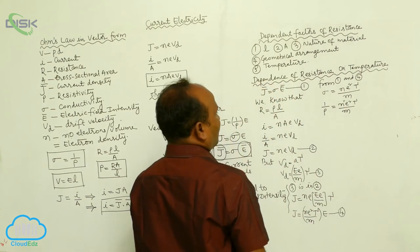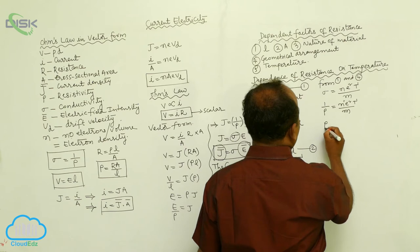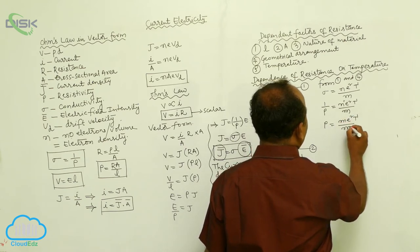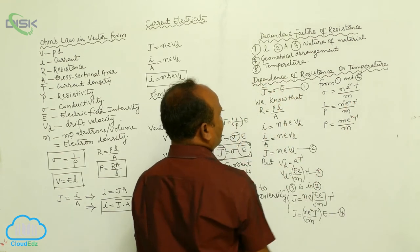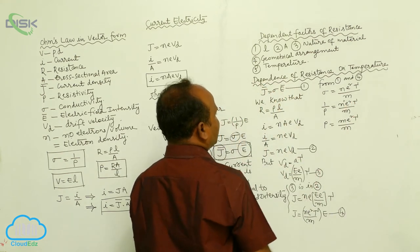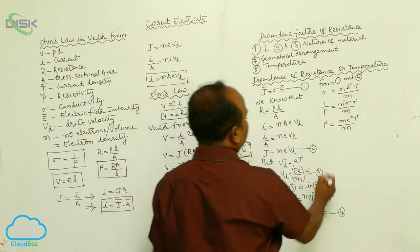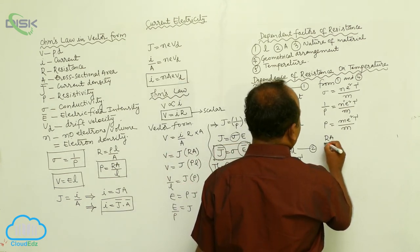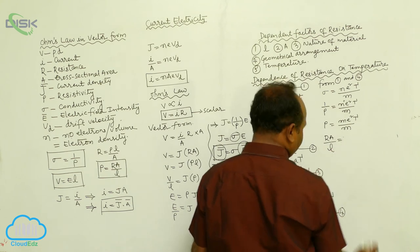Therefore, 1 by rho gives rho is equals to M by N E square tau. Therefore, rho is equals to R A by L.